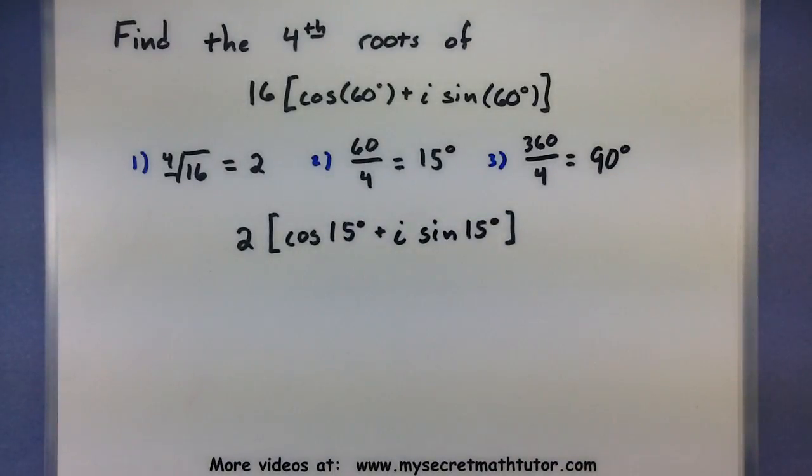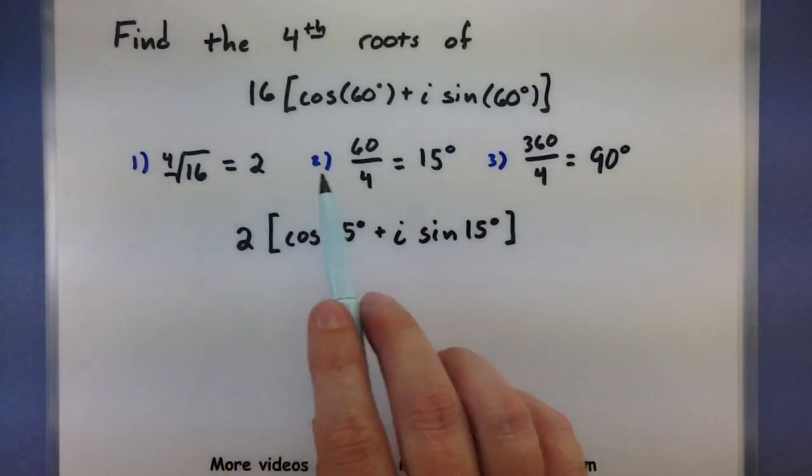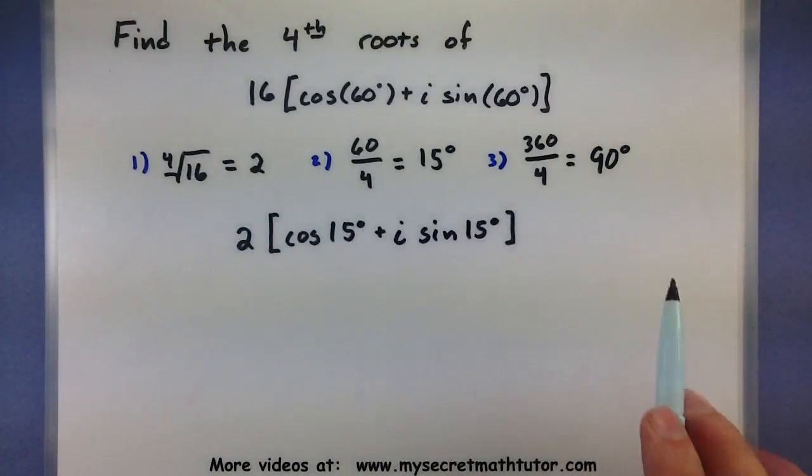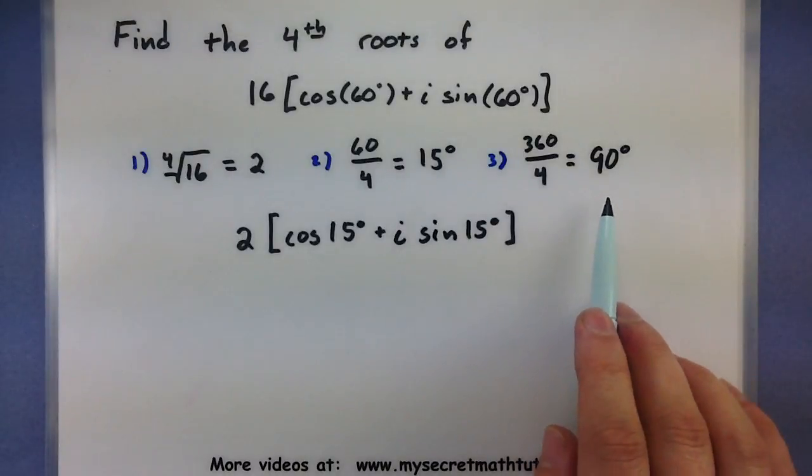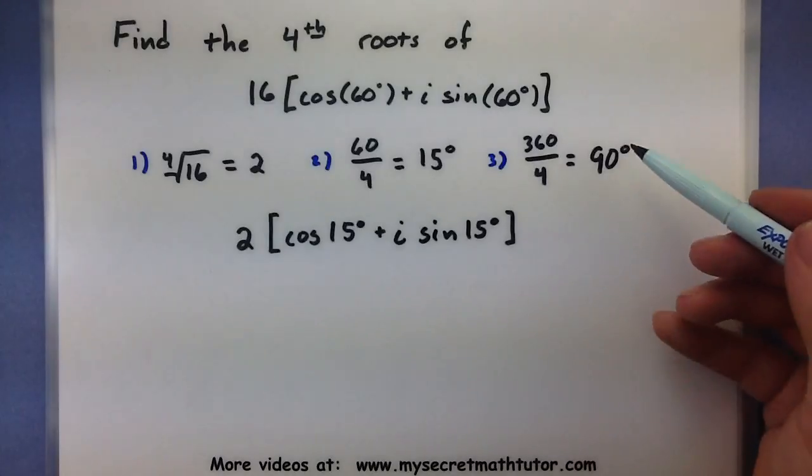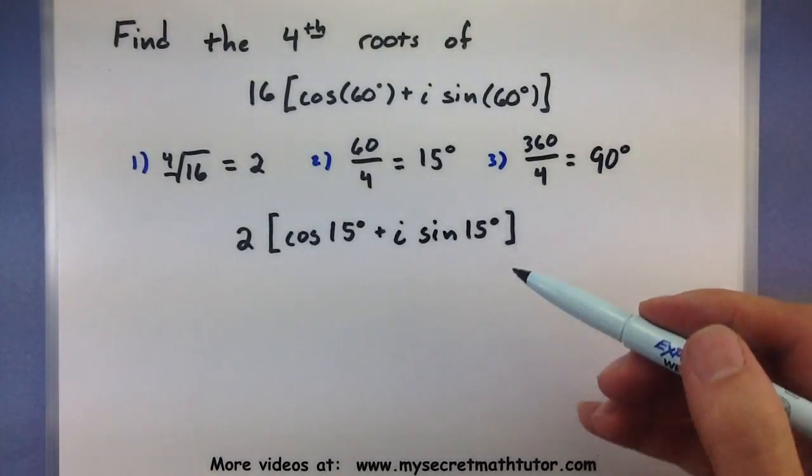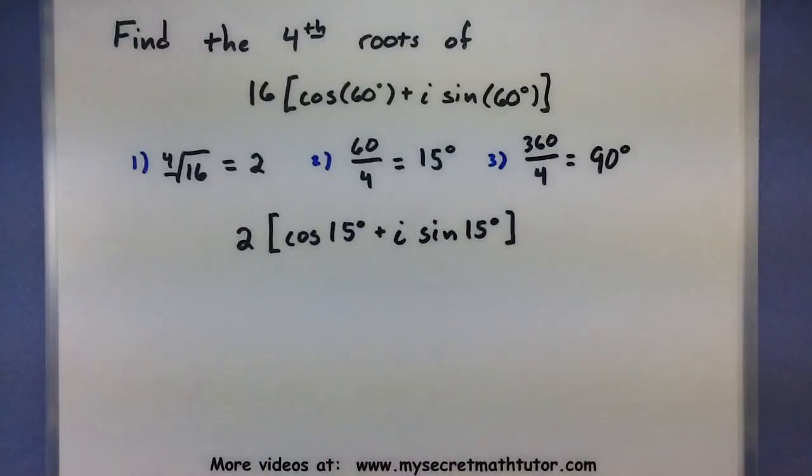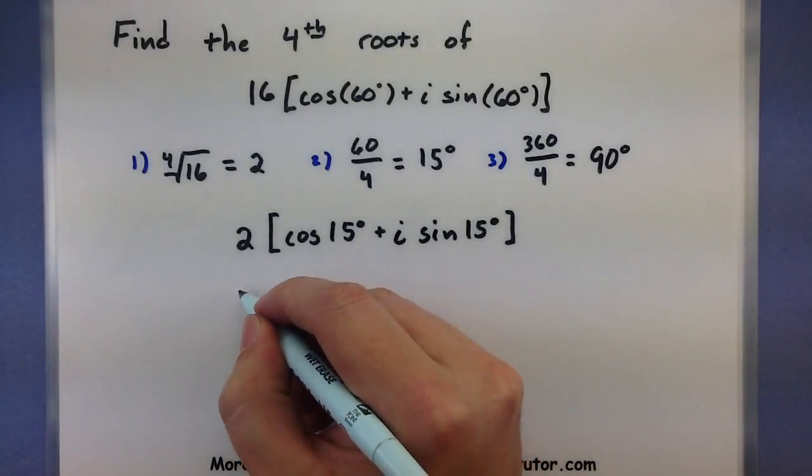Now, since we're doing the fourth roots, we should have 4 in total. And using just this and this, you can get the first one. The reason why we found this third bit of information is that it will tell us exactly how to get the rest. We simply add 90 degrees for every single one after that. What do we do about the two? It actually stays the same for all the rest.